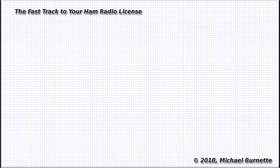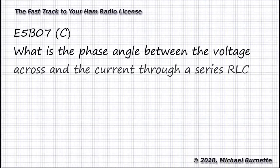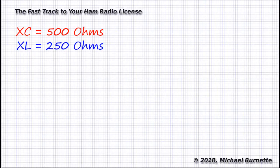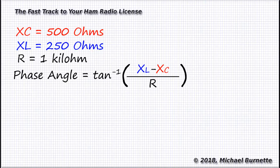Here is one of the questions from the exam pool — it's question E5B07. What is the phase angle between the voltage across and the current through a series RLC circuit if XC is 500 ohms, R is 1 kilohm, and XL is 250 ohms? To calculate the phase angle of a series RLC circuit, we need the capacitive reactance, the inductive reactance, and the resistance. They've given us all the values right there in the question. All we need to do is plug them into the right formula. The formula is: phase angle equals tan⁻¹ of (XL minus XC) over R. That tan⁻¹ means the reciprocal of the tangent — also known as arctan or arctangent.